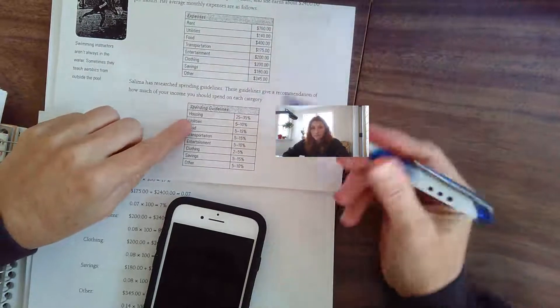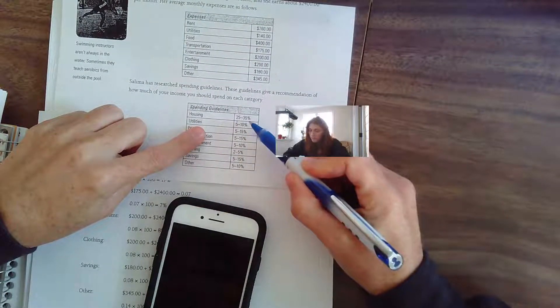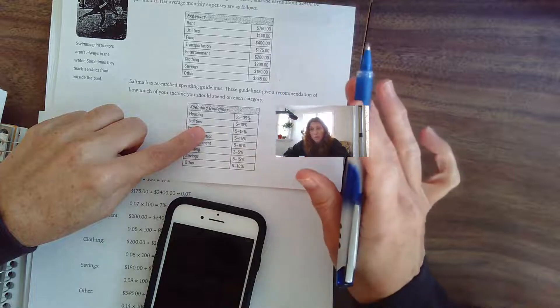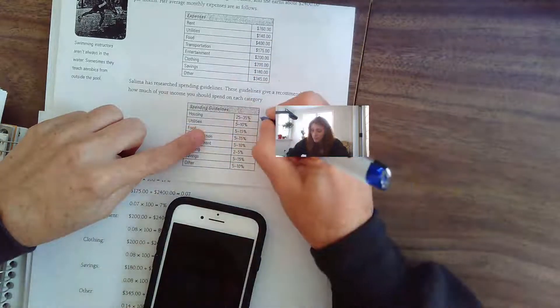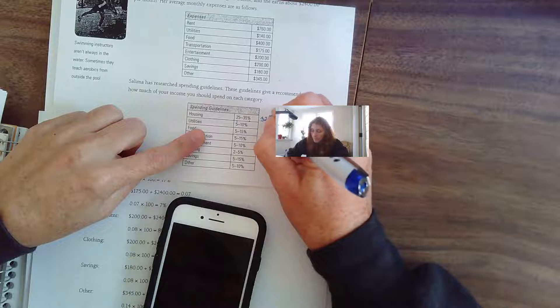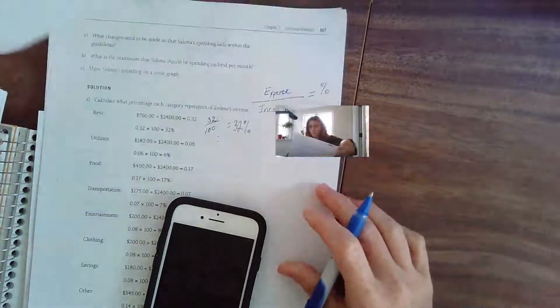So 32%—she spent 32% on her rent. Let's look at this guideline. Housing, 25 to 35%. So she's okay, but she's right at the top edge of it. She was spending 32% on her housing.